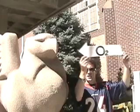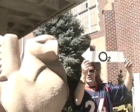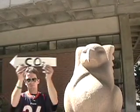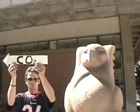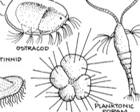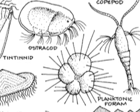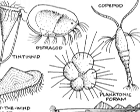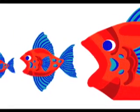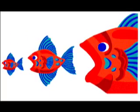The animals use O2 for respiration and growth and release CO2 back into the atmosphere. The same process occurs in the ocean. Phytoplankton uses CO2 for respiration and growth and are then eaten by zooplankton. The zooplankton are then eaten by a bigger fish.